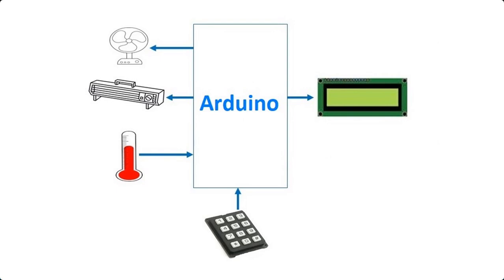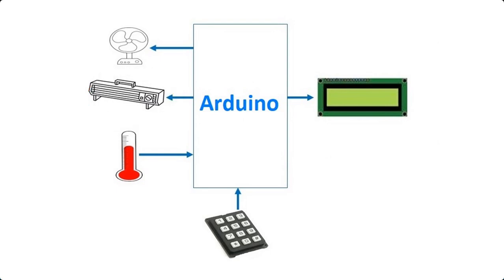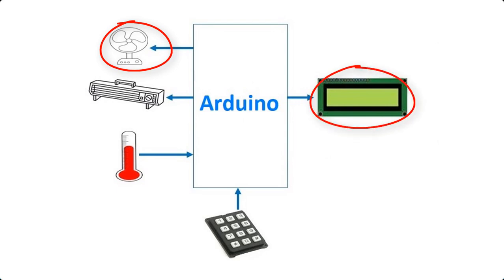The Arduino will read the temperature continuously and compare it with a set reference temperature. If the set reference temperature is higher than the measured temperature, then the heater will be switched on to warm up the area. But if the measured temperature is higher than the reference temperature, then the fan will be switched on to cool off the area. The LCD will show the measured temperature continuously.